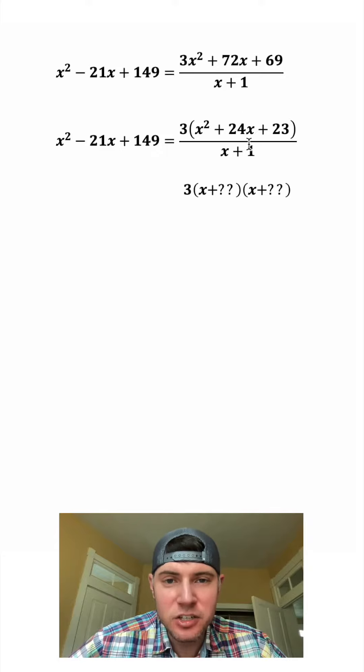And now there's another step we can do. We can factor this trinomial. So we're going to break this down into two separate binomials. We want two numbers that add to this 24 and multiply to 23. Well, that'll be 23 and 1.